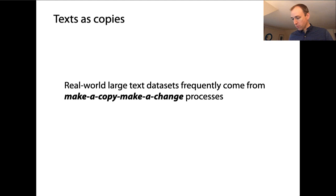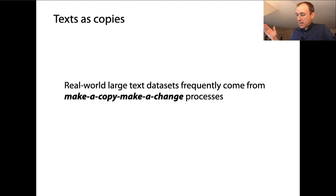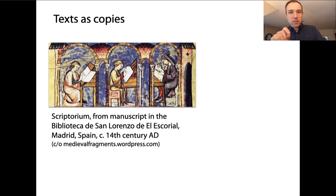Real-world large text data sets frequently come from these sorts of processes that tend to make a copy, make a change. One example would be like monks in a monastery copying a manuscript, right — copying and copying. And maybe they make a little mistake now and then, so they're making a copy and making, in that case, an inadvertent change. The process is copy, change, copy, change, copy, change.